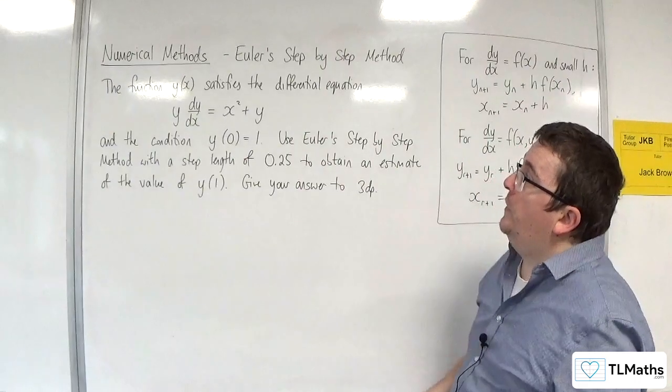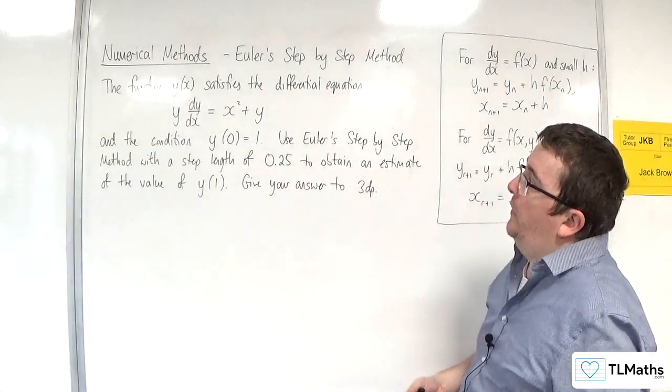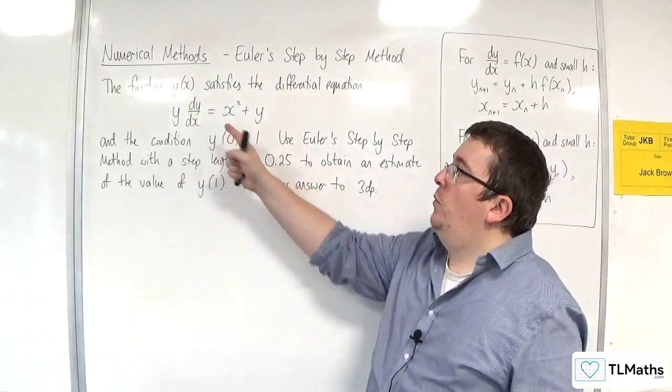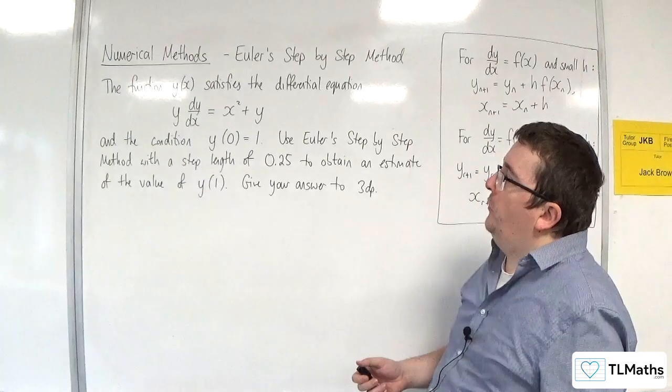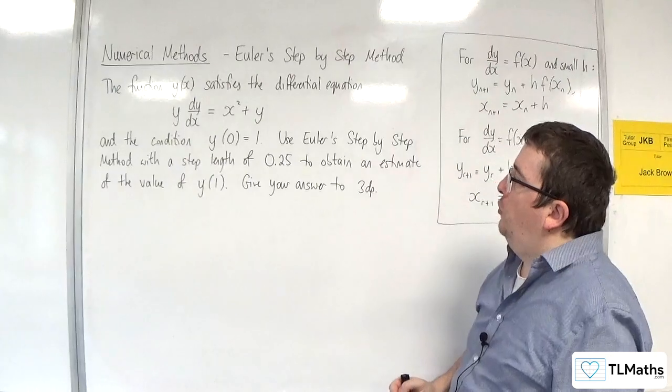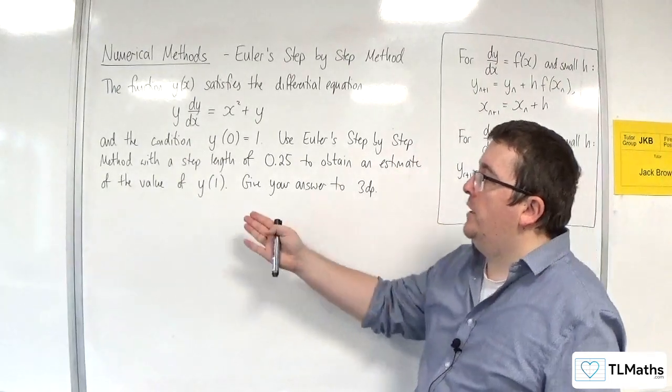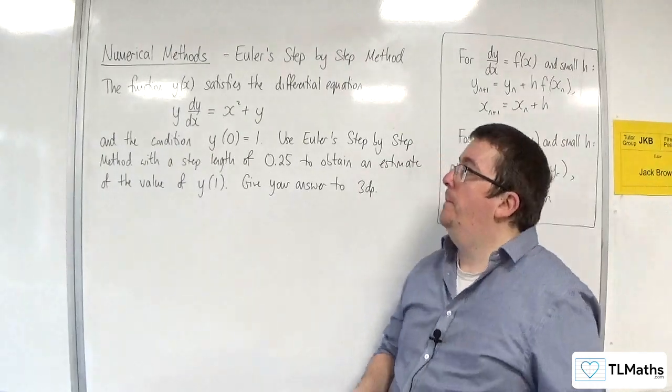In this video I'm going to go through an example of using Euler's step-by-step method. The function y of x satisfies the differential equation y dy by dx is equal to x squared plus y, and the condition y of 0 is equal to 1. Use Euler's step-by-step method with a step length of 0.25 to obtain an estimate of the value of y1. Give your answer to three decimal places.